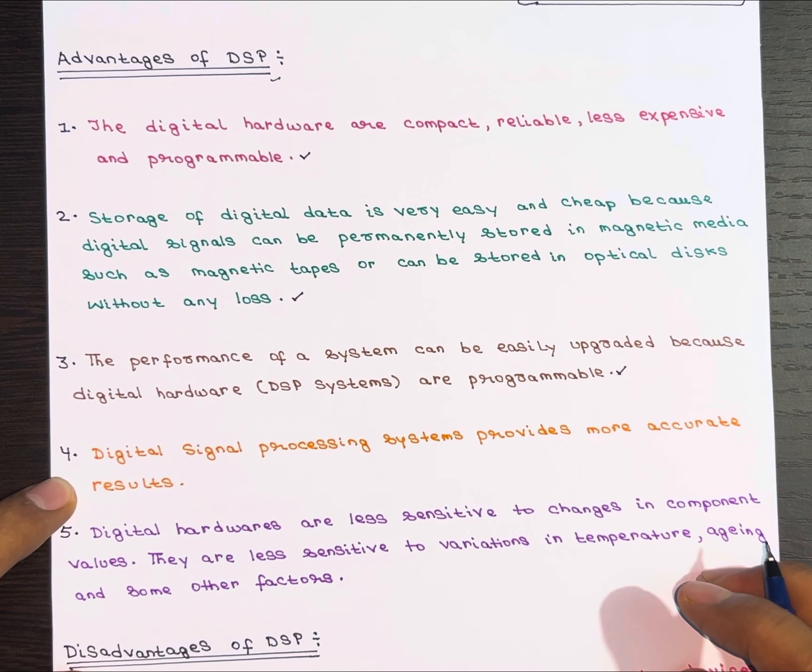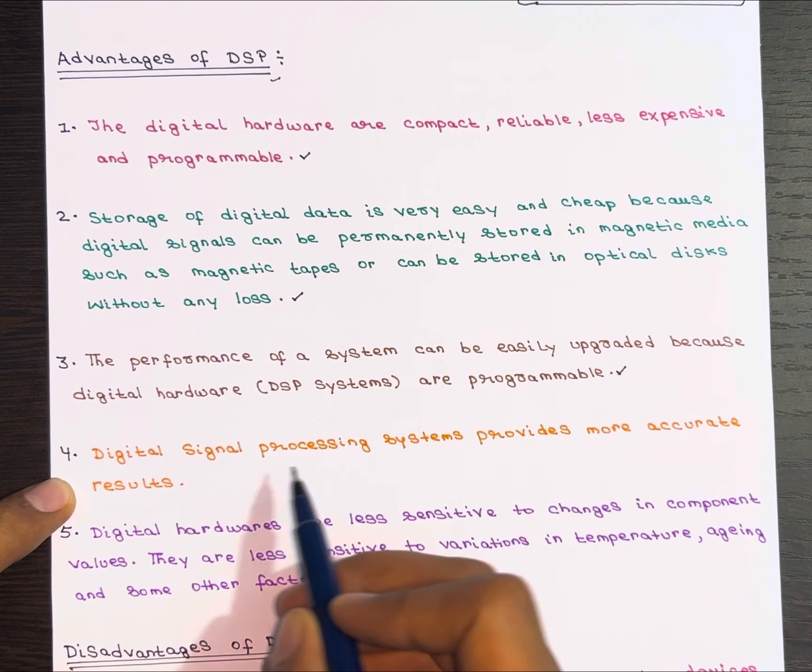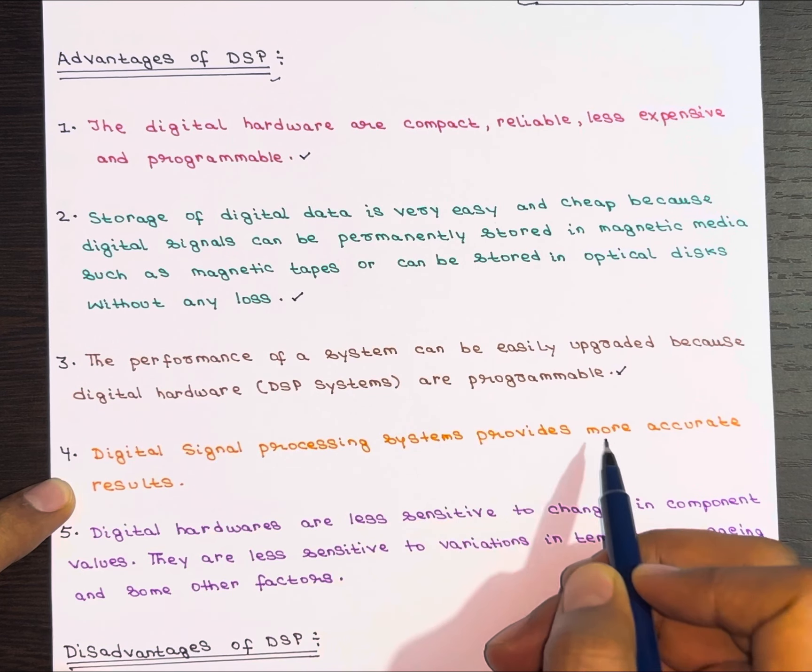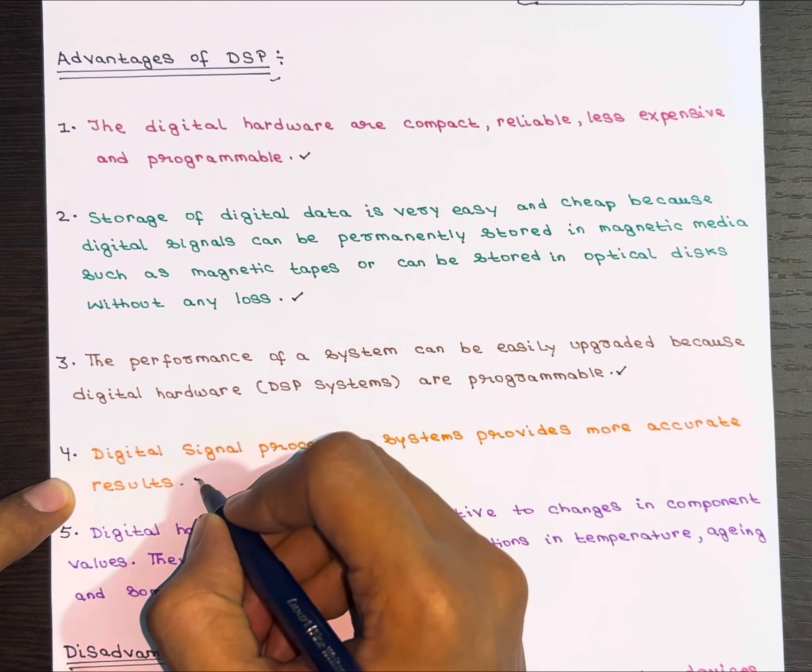Let's go to the next advantage. When it comes to accuracy, DSP systems take the cake. Digital signal processing systems provide more accurate results compared to analog systems.